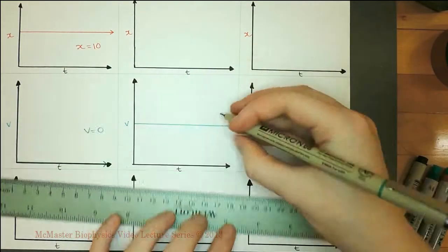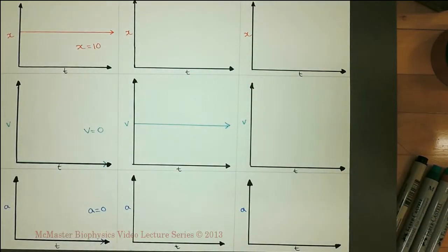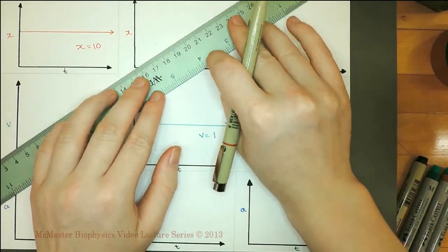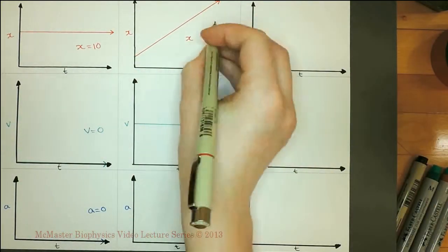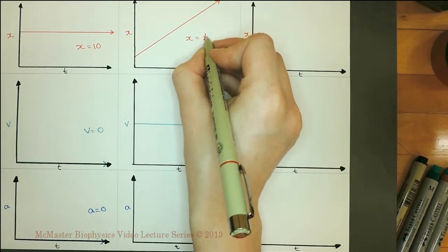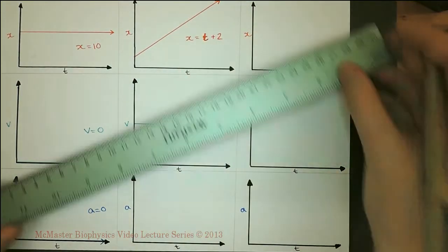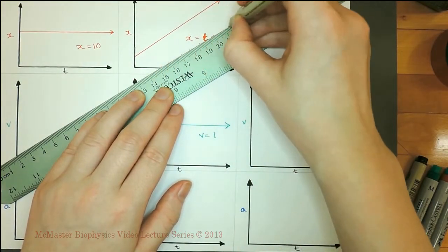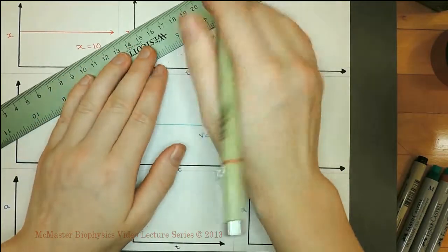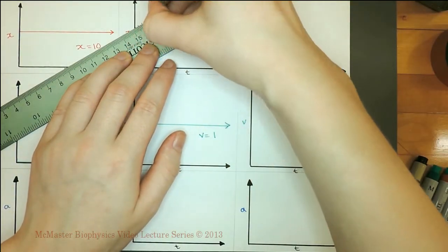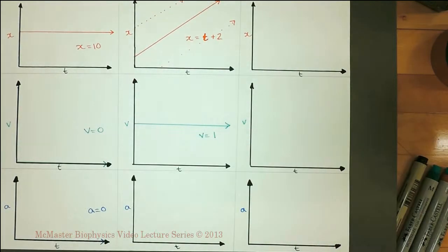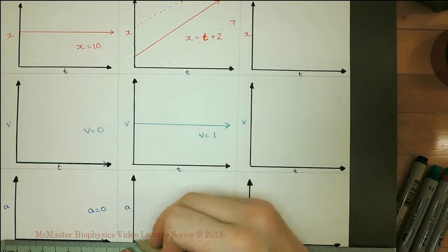In the second column, we have an object that moves with a constant, positive velocity. The position of this object is a straight line with positive slope. It can have any y-intercept, since all that is given to us from the velocity-time curve is the slope. The dotted lines represent other possible position-time curves. Because the velocity is unchanging, the acceleration is zero.